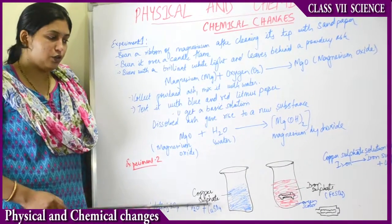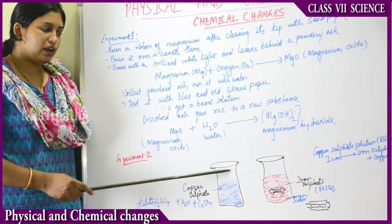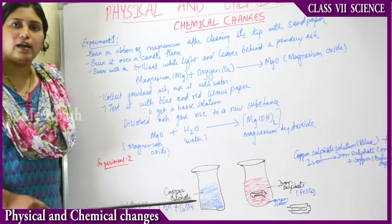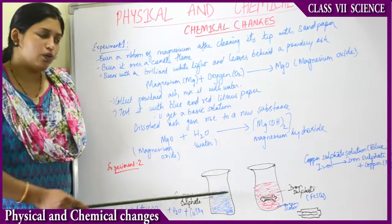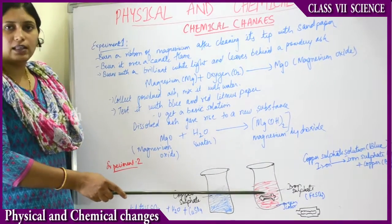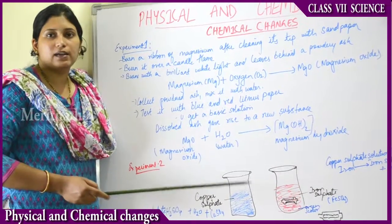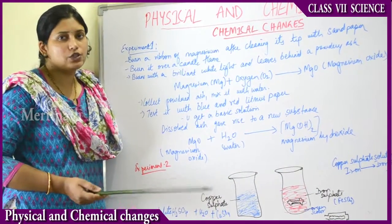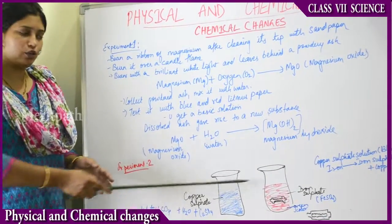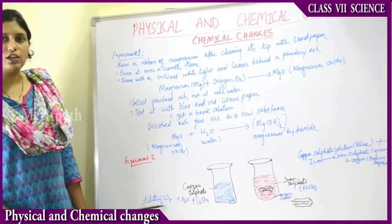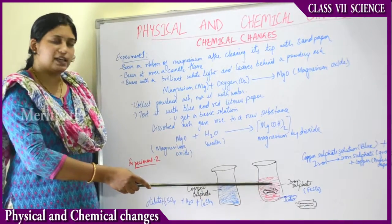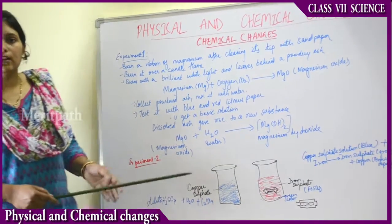The mixture of this solution will give you a blue-colored solution. In the second beaker, add half of this blue solution. Then to this second beaker, add a rusted iron nail or a blade which your father used for shaving. The solution is a mixture of dilute sulfuric acid plus water plus copper sulfate, which is blue in color. Add an iron nail or iron blade to it.